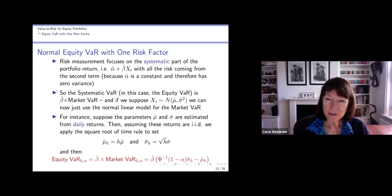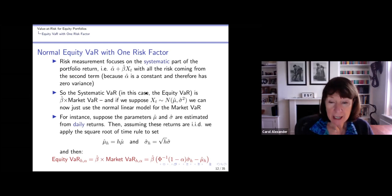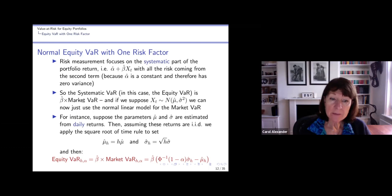The risk or the VaR, which is very closely related to the variance, is coming from the second term only. We need to look at the systematic VaR. In this case, we'd call it the equity VaR because it's an equity risk factor, an equity portfolio. So the systematic VaR is just beta hat times the VaR of the risk factor or the market index VaR. And if we suppose that this market index returns are normally distributed, we just use the normal linear model for X.